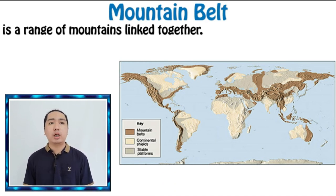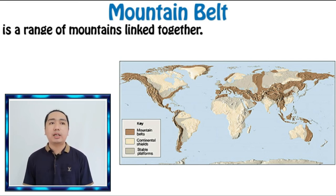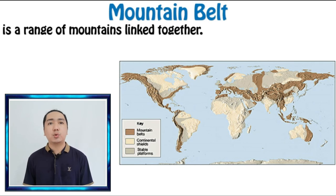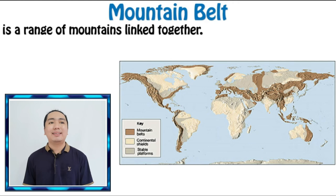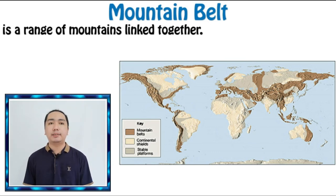Mountain ranges surround most of the Pacific Basin. A nearly continuous chain of mountains can also be traced from Morocco in North Africa through Europe, across Turkey and Iran, through the Himalayas to Southeast Asia. This is the Mid-Continental Belt, which extends further to include Tibet, the Pamirs, and the mountains of Tien Shan.